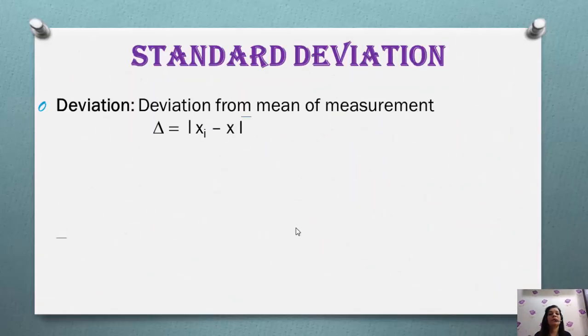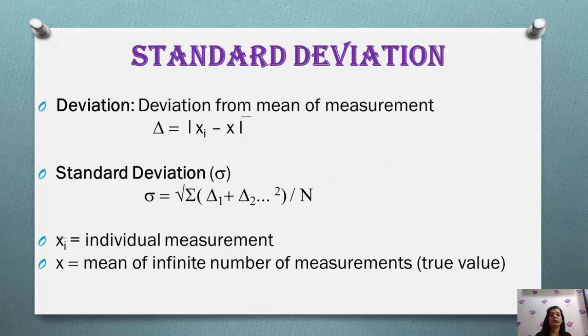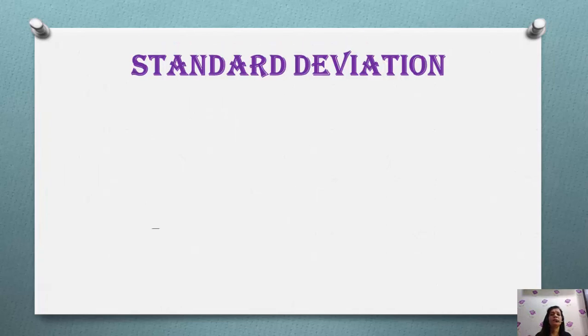Precision is expressed in terms of deviation, standard deviation, relative standard deviation, and coefficient of variation. Precision is expressed without regard to sign. Deviation is mod of individual observation xi minus mean of your result. Standard deviation sigma is expressed as square root of summation of deviations divided by number of observations, where xi is individual measurement, x bar is mean of infinite measurement, and n is number of measurements.